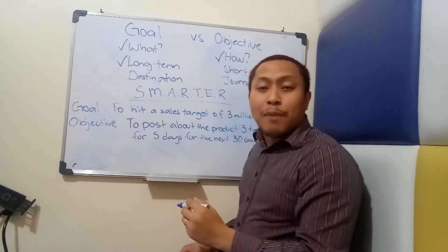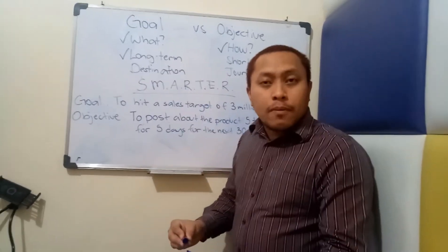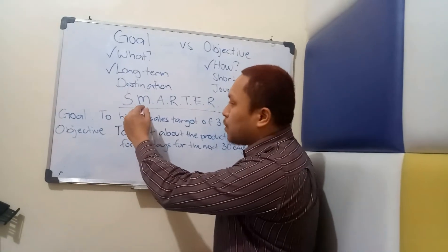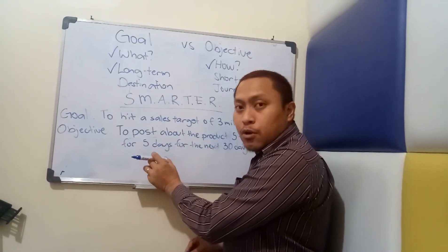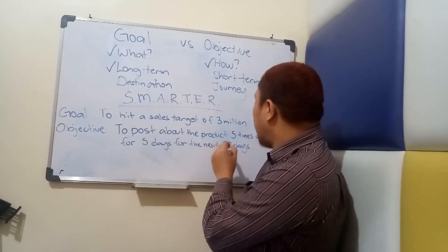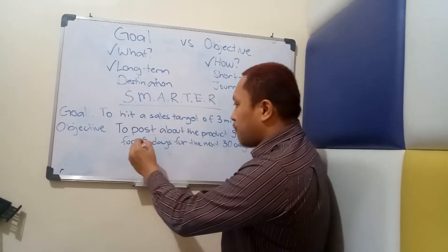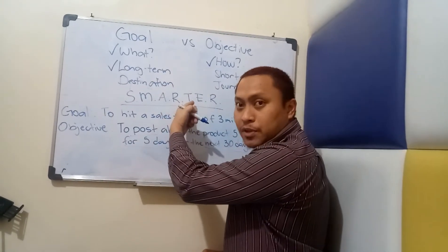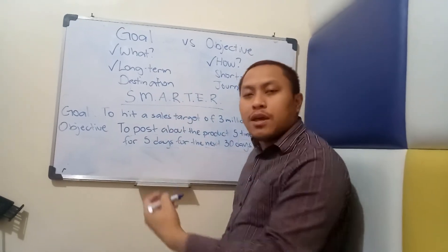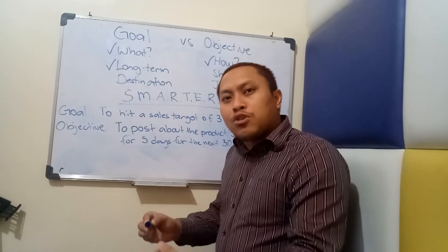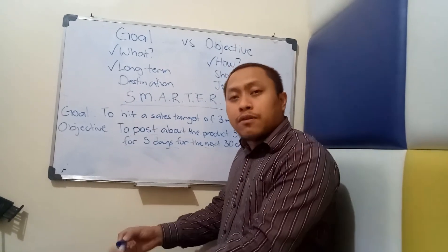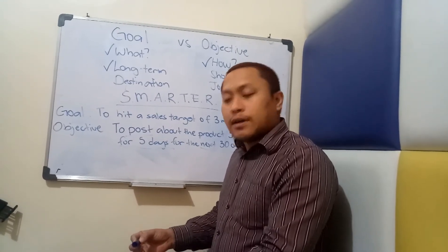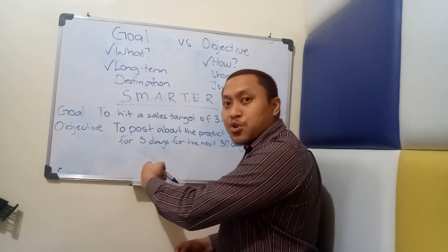M stands for Measurable, because there's a saying that goes: what we can't or don't measure, we can't or don't manage. So there has to be a measurable aspect or factor of your objective. In our example, the measurable factor is 'five times a day for five days for the next 30 days' — although the time element will fall under T, which we'll discuss in a bit. There has to be a measurable aspect so that when you carry out your objective, from time to time you can check whether you're on the right track.